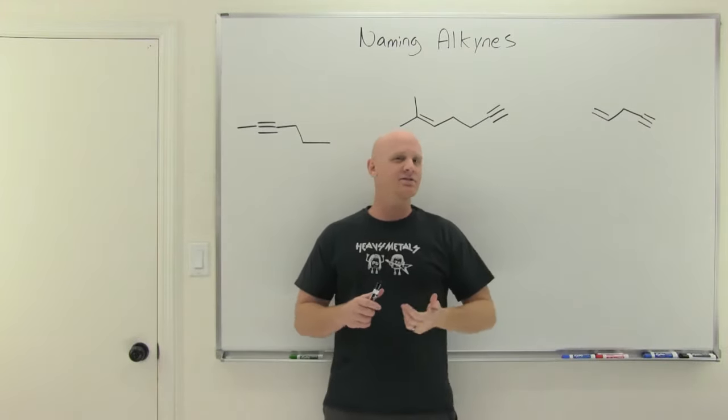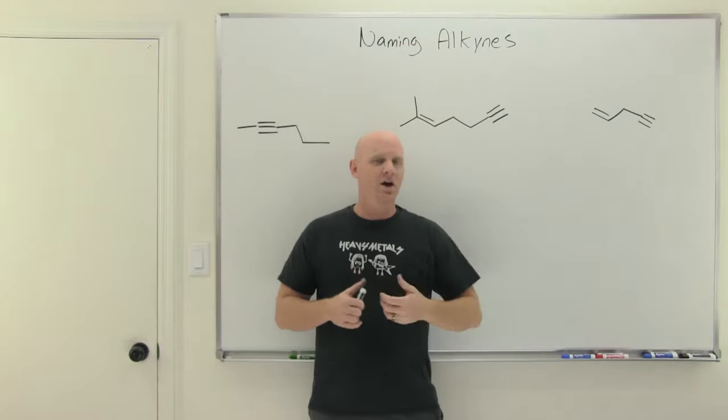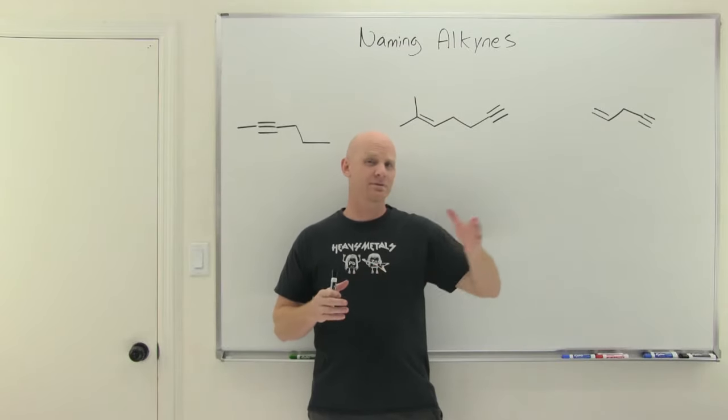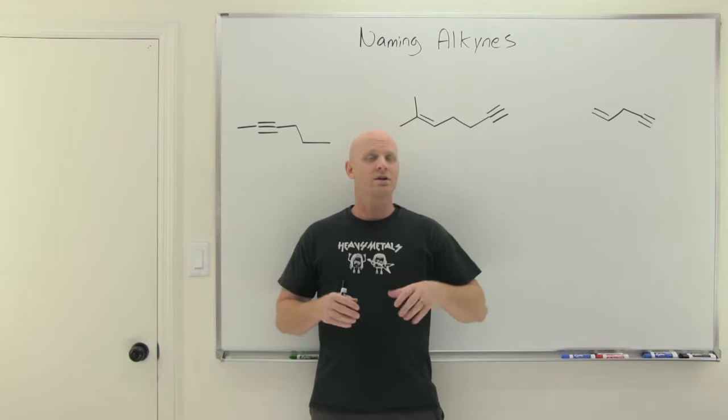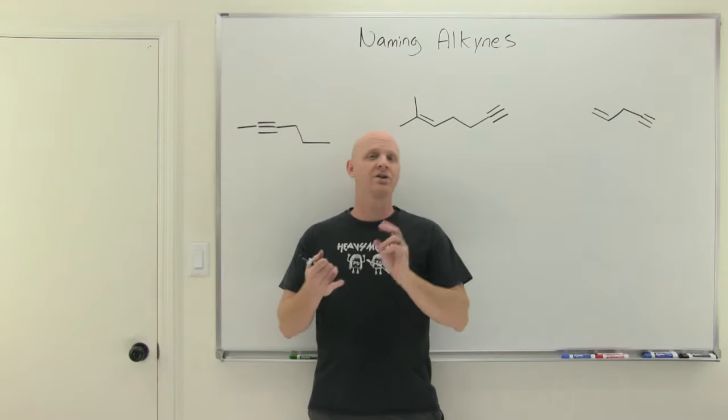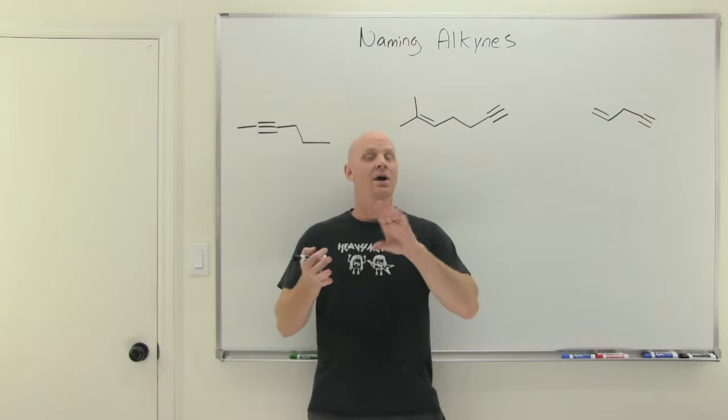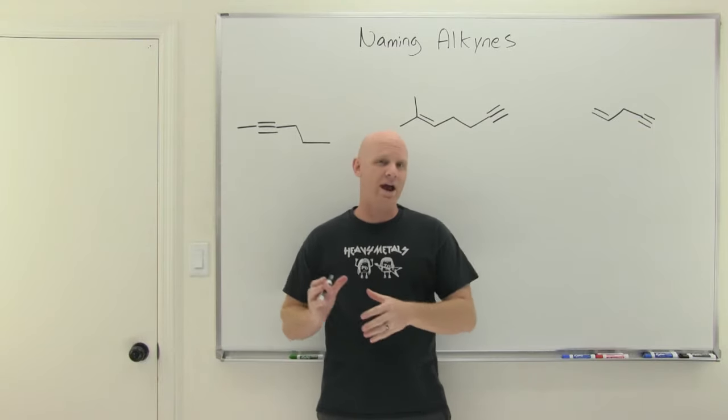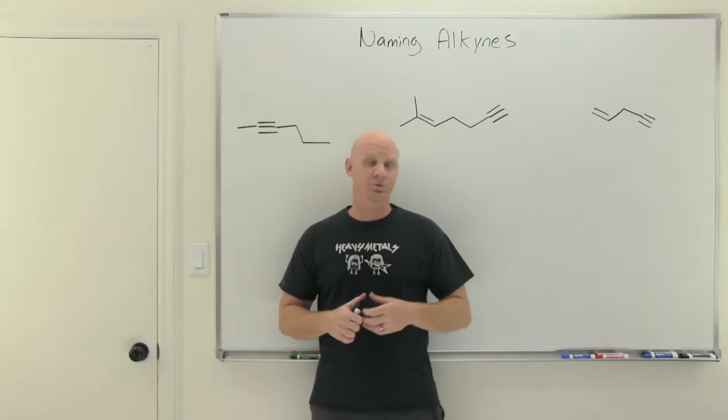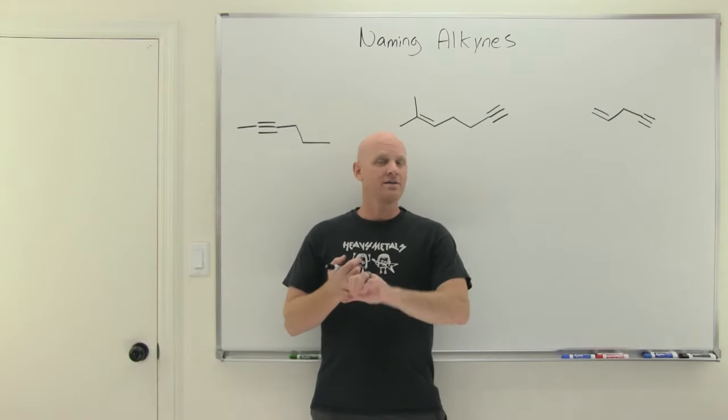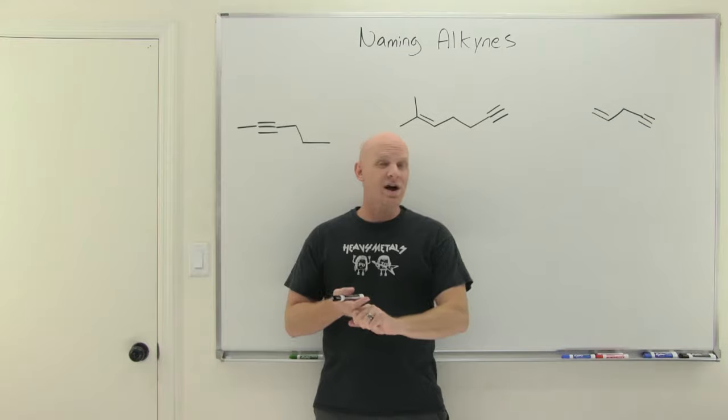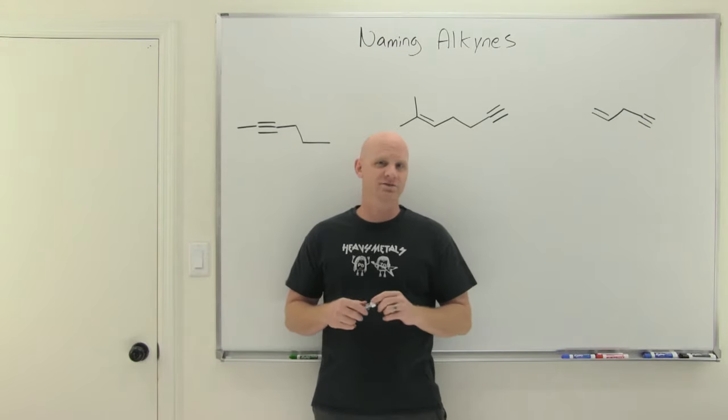Naming alkynes is the topic of this first lesson in a chapter dedicated to alkynes. This chapter follows a pattern for future chapters throughout second semester organic chemistry. We'll devote an entire chapter to a functional group, learning how to name it, basic physical properties, how to synthesize compounds with that functional group, and the different reactions associated with it. First we'll name alkynes, then learn a key physical property, how to make alkynes, and all the different reactions of alkynes.